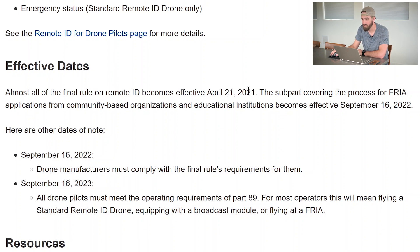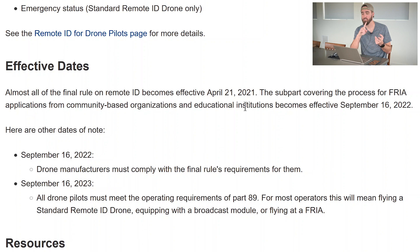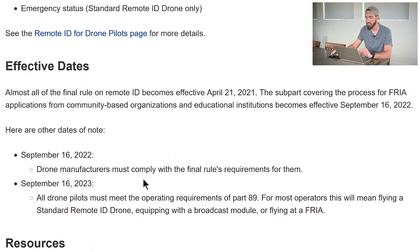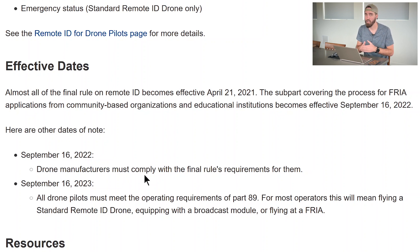Almost all of the final rule on Remote ID becomes effective April 21st, 2021. The subpart covering the process for FRIA applications — for community-based organizations or educational institutions — goes into effect September 16, 2022, which is also when drone manufacturers must comply. This means by September 16, 2022, no drone being sold in the US can be sold without standard Remote ID. The broadcast module retrofit is essentially a grace period for people who want to comply but aren't ready to upgrade yet.